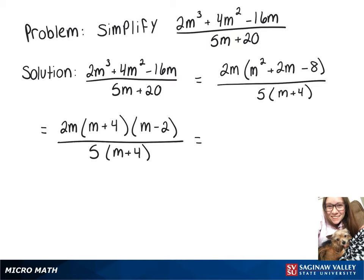Now we can rewrite that as m plus 4 over m plus 4 times 2m times m minus 2 over 5.